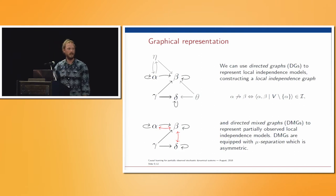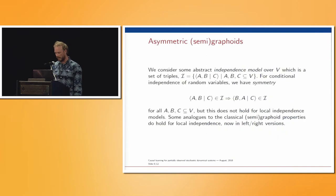This will give me a larger class of graphs, which are the directed mixed graphs, to represent these partially observed local independence models. We equip this class of graphs with a graphical separation criterion which is called nu-separation. This is very much like m-separation, but again also asymmetric. What we are trying to model is local independence, which is asymmetric, and therefore also this separation criterion should be.